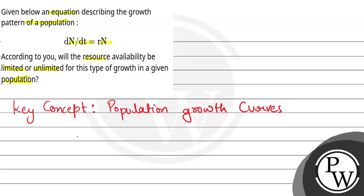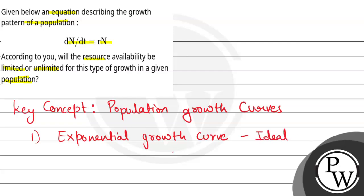Population growth curves can be of two types. One is the exponential growth curve. In the exponential growth curve, we consider that under ideal conditions — where food, shelter, water, everything required for a species for survival is present in unlimited amount — we say that there will be unlimited resources present. In this ideal condition, the graph will show exponential growth and the species will grow well.